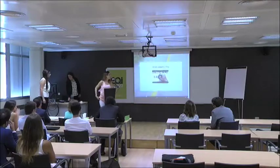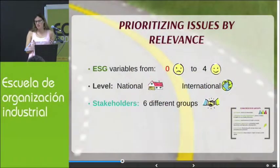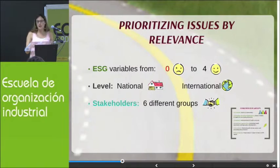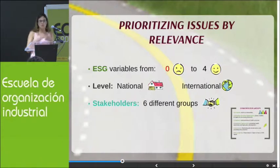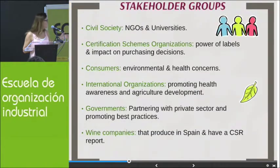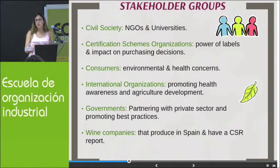We have seen the environmental, social, and governance variables that impact the wine sector, but not all of them have the same importance. This is why we have prioritized them by analyzing how different stakeholders consider their relevance — rated from zero, meaning the stakeholder doesn't discuss this issue, to four, meaning they believe it is a material issue — divided between national and international levels. Here we can identify the six stakeholders we examined, mainly wine companies with sustainability reports stating their material issues.